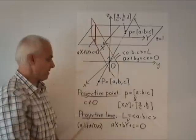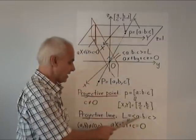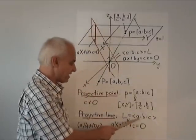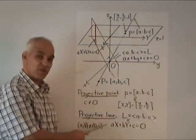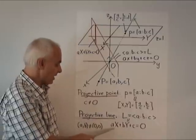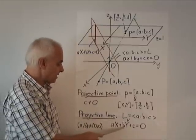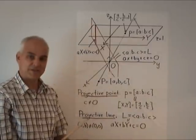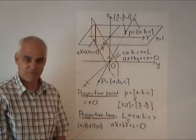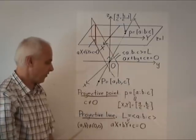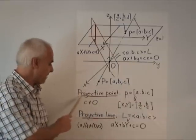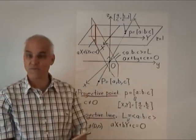So these are the fundamental objects in projective geometry. And a projective line, which is given by pointy brackets A to B to C, corresponds to the standard line AX plus BY plus C equals zero in ordinary XY space. That's provided that A and B are both not equal to zero. So these are the fundamental objects in projective geometry.